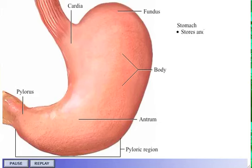The stomach expands to store ingested food. Its movements pulverize lumps and mix stomach secretions with the food. Acidic gastric juice digests cells, tissues, and some macromolecules. Partially digested food is called chyme.